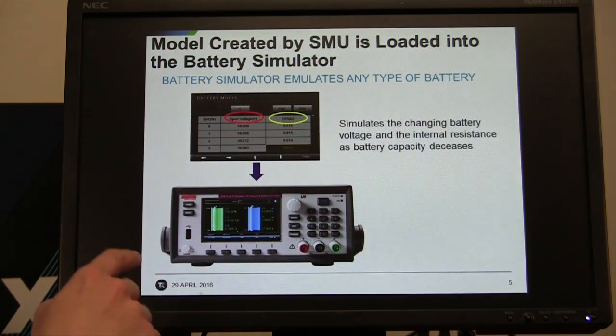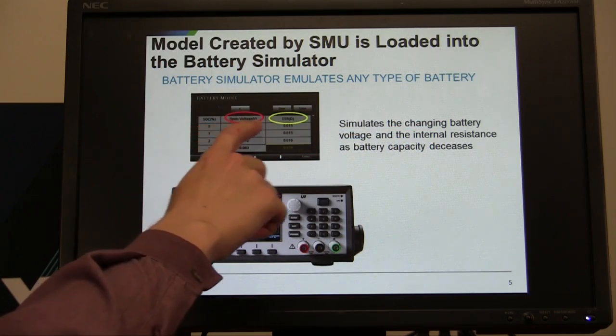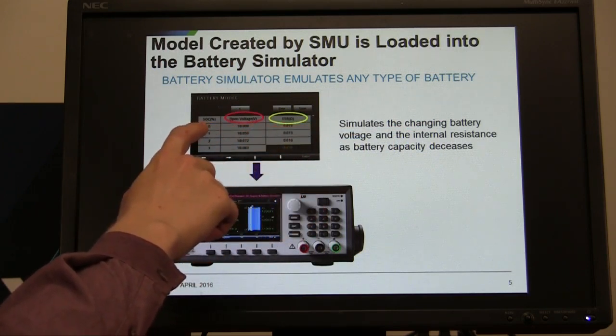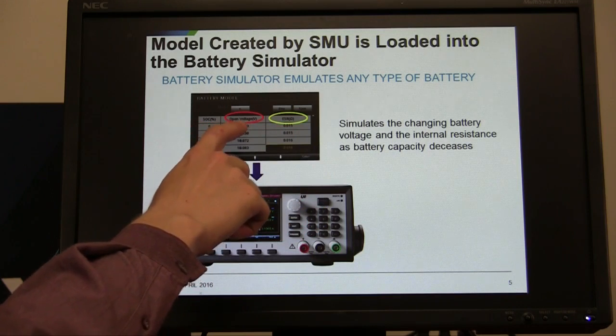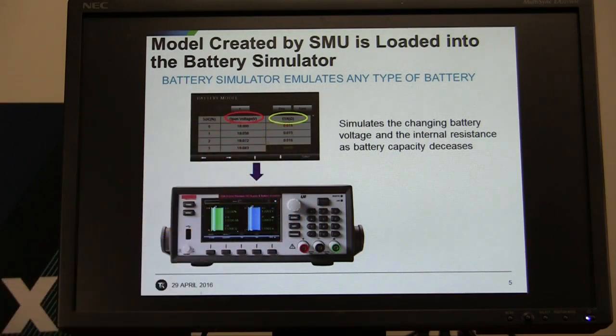So when you load the model back into the 2281, essentially it is an array of data with state of charge, open voltage, and internal resistance points for each percentage state of charge along the way.